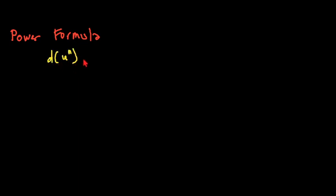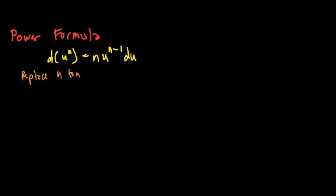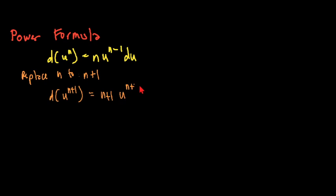From differential calculus, we have d(u^n) = n·u^(n-1) du. If we replace n with n+1, we could have our formula as d(u^(n+1)) = (n+1)·u^((n+1)-1) du.